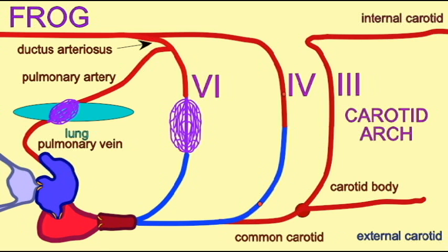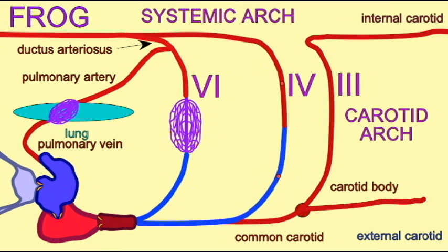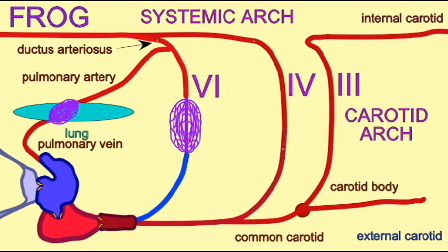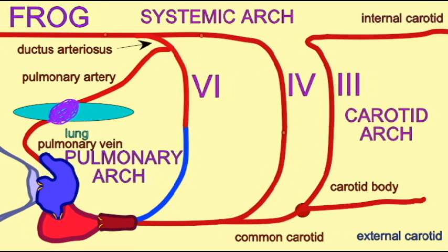Aortic arch 3 is converted into the carotid arch. A common carotid forms to unite what was once a blood vessel connected to the dorsal aorta — the internal carotid — and one to the external carotid, which came from the ventral portions.